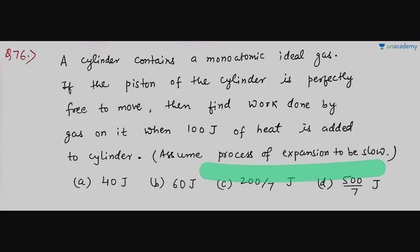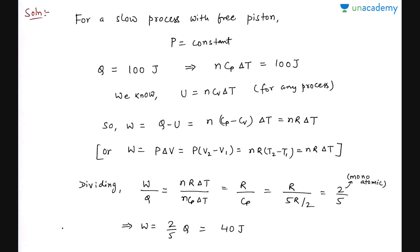Now let's see the solution. For a slow process with a free piston — if the piston is free to move — then the process is isobaric, or a constant pressure process. So this is going to be an isobaric expansion.